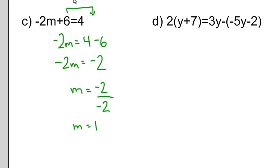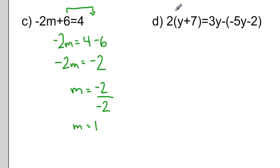The only way we can really make these questions more complicated is by adding more terms, adding variables to either side of the equal sign, or maybe even adding in brackets like we've done in question D. When we have a question like this with brackets, we need to get rid of the brackets first, and we can do that by distributing.